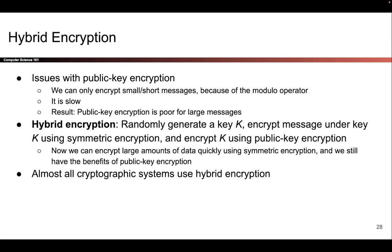So it's two parts: first, you encrypt a symmetric key using public key encryption; then you encrypt the message itself using the symmetric key. When Bob decrypts, he first uses public key to unlock the symmetric key K, and once K is unlocked, he can decrypt the overall message. That's called hybrid encryption. It allows us to encrypt large amounts of data very quickly using symmetric encryption, while Alice and Bob don't have to share a key ahead of time — and this is actually what a lot of cryptographic systems use today.